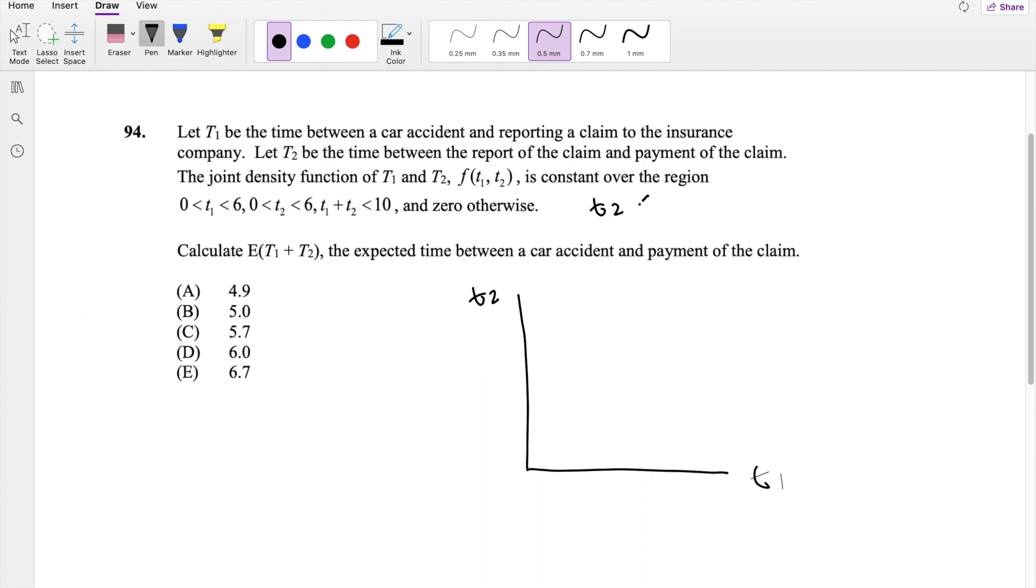So it's going to be this line from 10 to 10. That was a pretty straight line, I'm pretty impressed. But then t1 and t2 are both enclosed within 6. So let's say this is like 6, right?